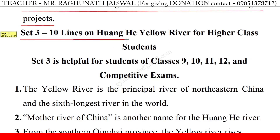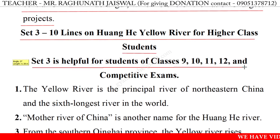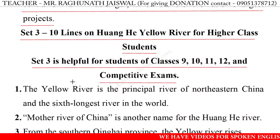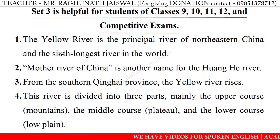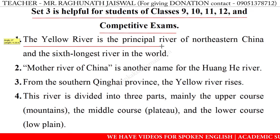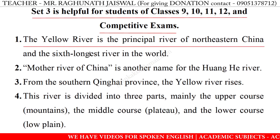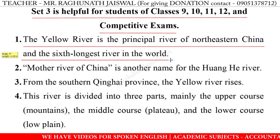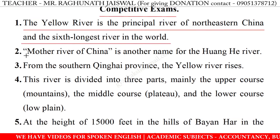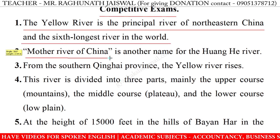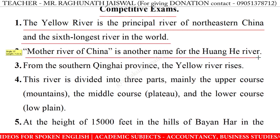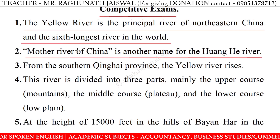10 lines on Huanghe Yellow River for higher class students. This set is helpful for students of classes 9, 10, 11, 12 and competitive exams. 11. The Yellow River is the principal river of northeastern China and the sixth longest river in the world. 12. Mother River of China is also another name for the Huanghe River.